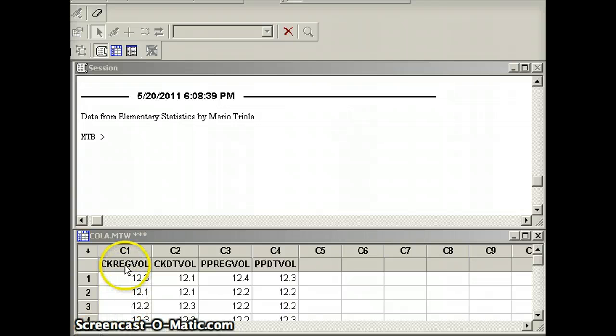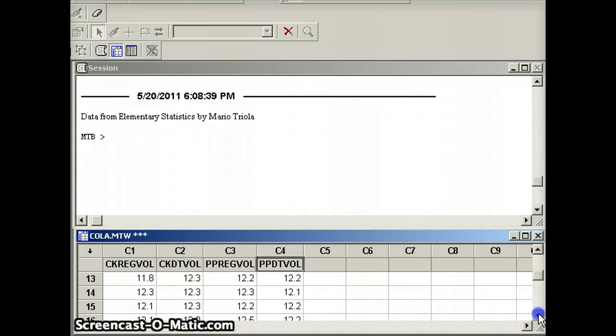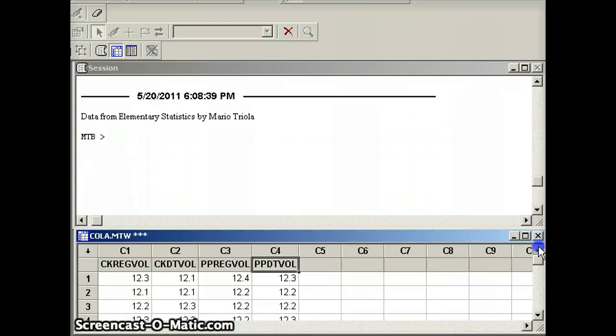So there's our data, Coke regular volume, Coke diet volume, Pepsi regular volume, and Pepsi diet volume. This data is taken from Elementary Statistics by Mario Triola. And if we look at all of the data, we will see that there are a total of 36 cans in each of the categories. So we apparently have three 12-packs, 36 cans in each of the categories. We want to compare all of them.